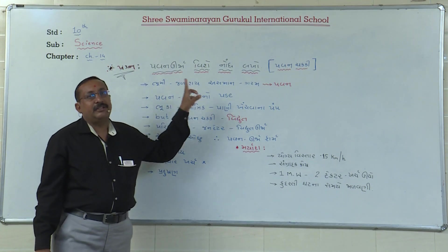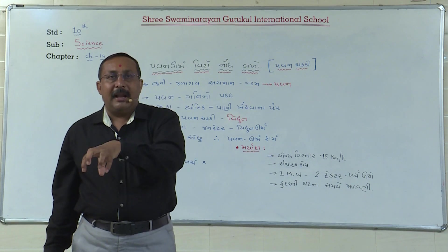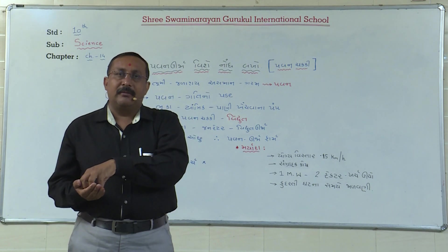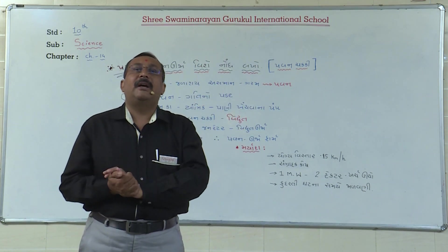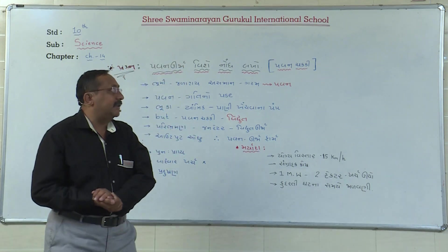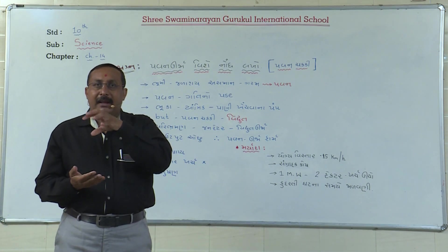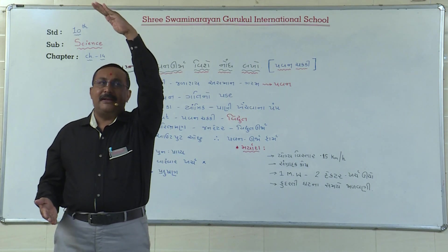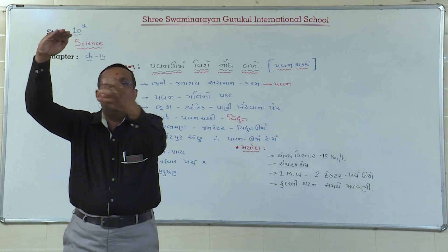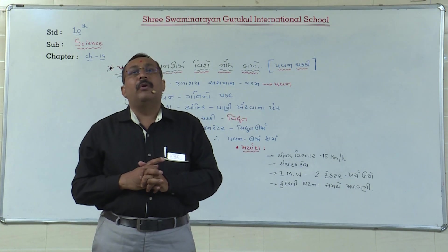ભૂમિ ઝડપથી ગરમ થાય છે અને ઝડપથી ઠંડી પણ થઈ જાય છે. દરિયો ગરમ થવામાં વધારે સમય લે છે. જ્યારે જમીન ઝડપથી ગરમ થાય છે ત્યારે જમીન ઉપરની હવા પાતળી બને છે. પાતળી હવા ઉપરના ભાગ તરફ જાય છે. દરિયા કિનારાની હવા ઠંડી અને ઘટ્ટ હોય છે, એટલા માટે પાતળી હવાનું સ્થાન ઘટ્ટ હવા લે છે.